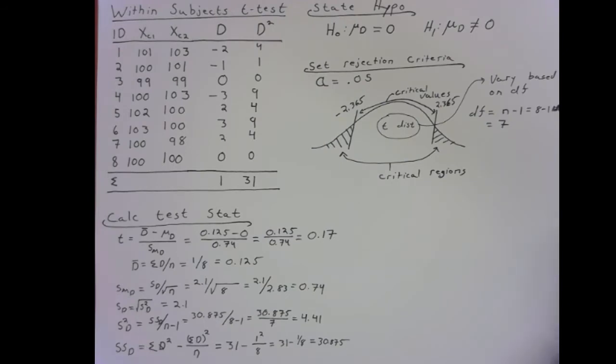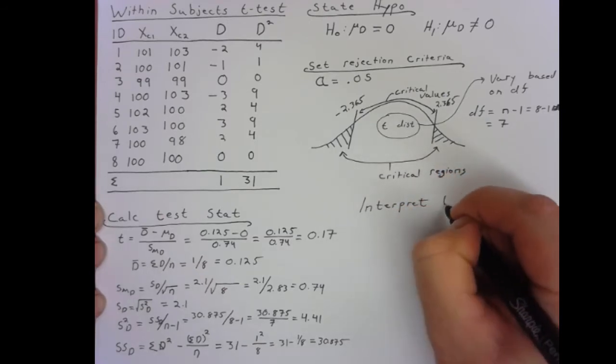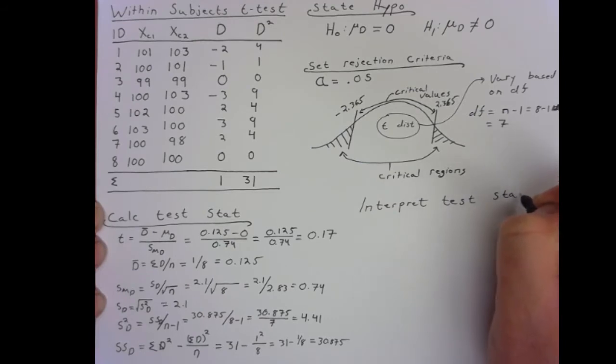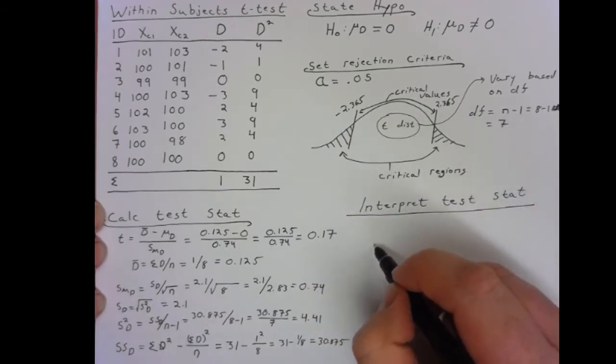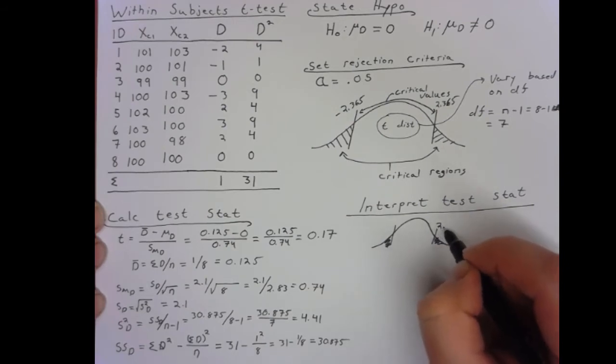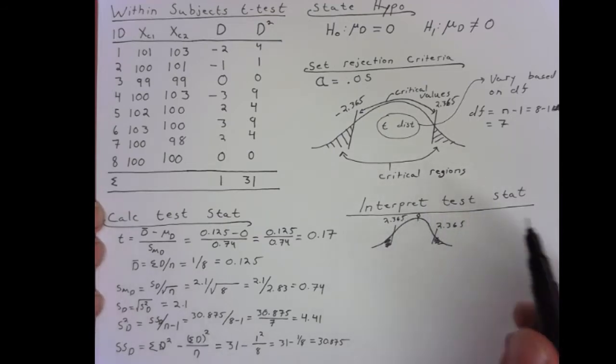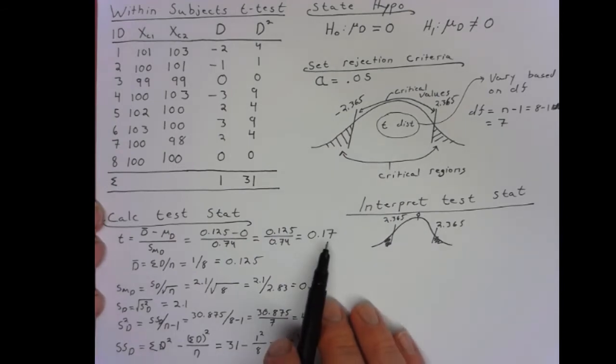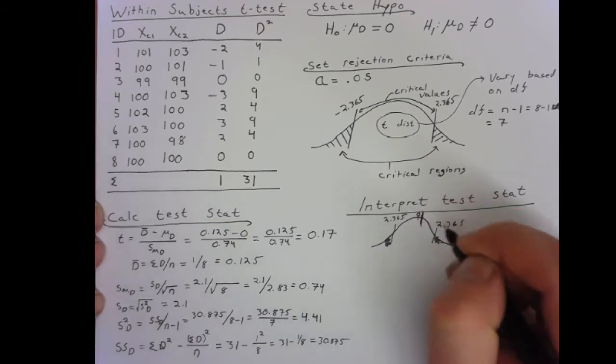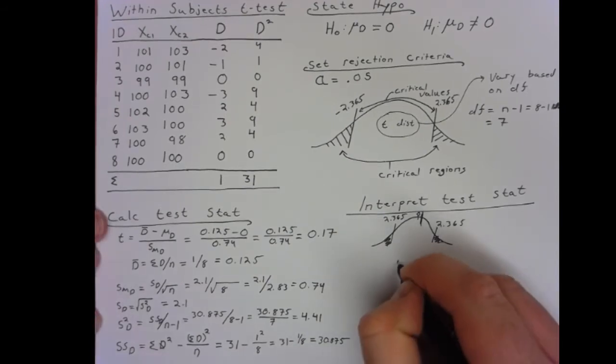From here, what we then need to do is actually interpret our test statistic. If we think about our t-distribution and we just sketch it out here real quick, we have our critical region over here, critical region over here, 2.365, 2.365. And then, we have zero because it's symmetrical about zero. When we think about our test value of 0.17, we are probably somewhere right here. We're most definitely not in the critical region. Therefore, we do not have an extreme value that has a less than a 5% chance of occurring due to random chance. So, we fail to reject.